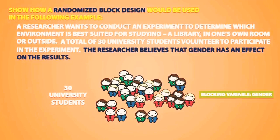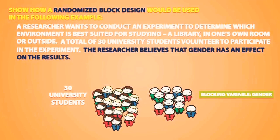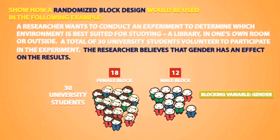First, we separate our experimental units based on gender. One block will be for females and one block will be for males. There are 18 females and 12 males. Then, the experimental units in each block will be randomly assigned to three different groups to receive a treatment.